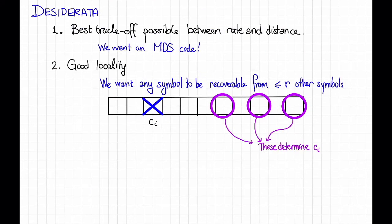In more detail, here are some things that we might want. First, we might want the best possible tradeoff between rate and distance. That is, let's say that we want an MDS code. MDS codes like Reed-Solomon codes are typically used in distributed storage systems, so we don't want to be giving that up if we don't have to.